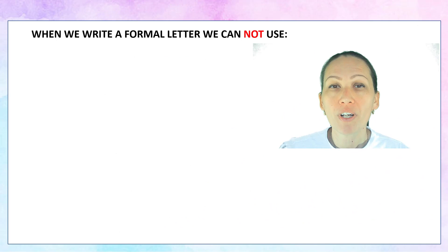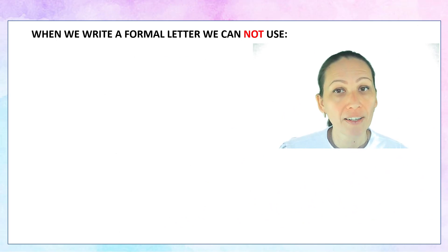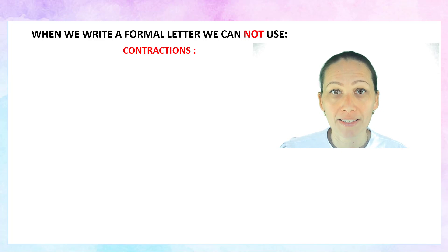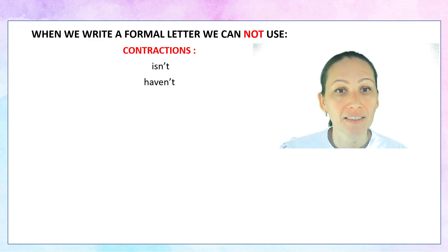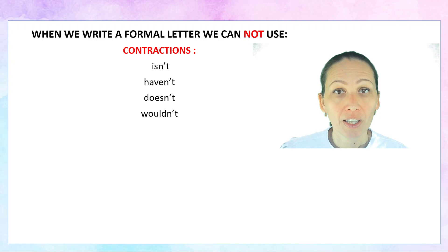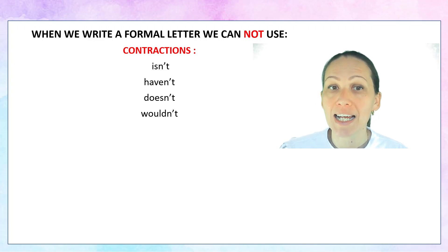When you are writing a formal letter, you have to bear in mind that we cannot use contractions. So we cannot write 'isn't,' 'haven't,' 'doesn't,' 'wouldn't,' or 'shouldn't.' It should be 'is not,' 'have not,' 'does not,' or 'would not.'